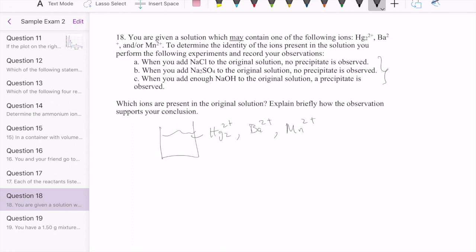A way to solve this problem is really to use the solubility rules. So let's take a look at the first observation. And the main thing to keep in mind before we start looking at the observation is that these are all cations. So the key to look for in the observation is when we're adding something like NaCl or Na₂SO₄ or NaOH, is to think about what the anions from those compounds will do to the cations that we have.